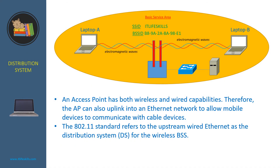As you know, an access point has both wireless and wired capabilities. Therefore, the AP can also uplink into an Ethernet network to allow mobile devices to communicate with cabled devices. The 802.11 standard refers to the upstream wired Ethernet as a Distribution System for the wireless BSS.